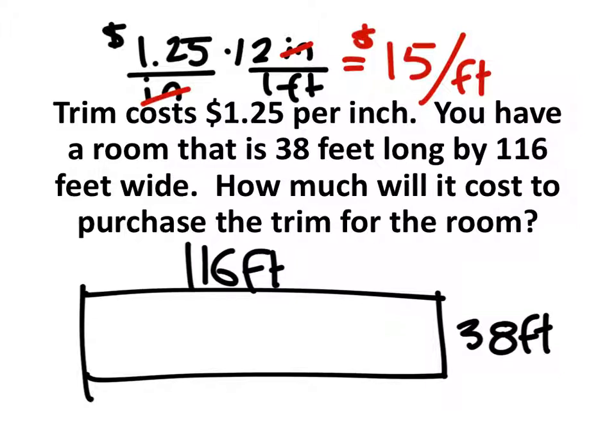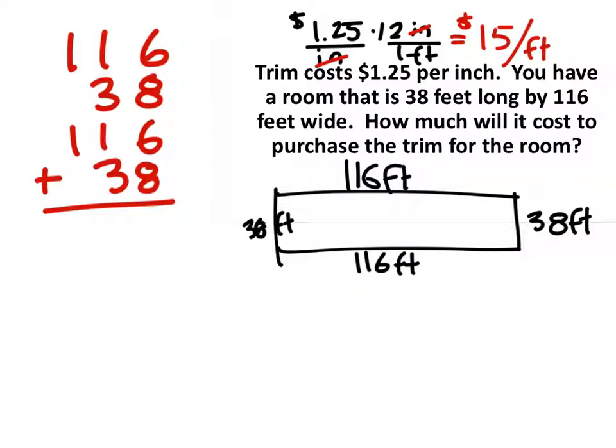Now, since we're looking for a perimeter, I am going to label all four sides. So how do I find the perimeter of this rectangular room? Well, I'm just going to add all the sides together. Now, you guys may do this a little bit differently. You can multiply the two sides by two, since we have two of the same. I don't mind just adding these together.